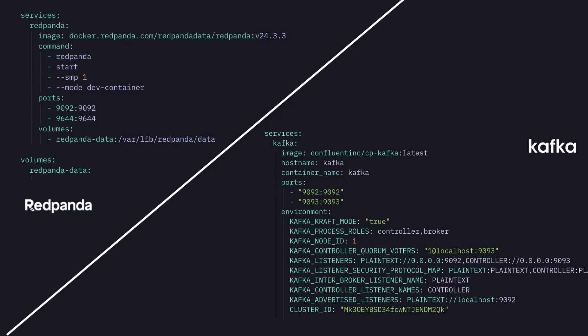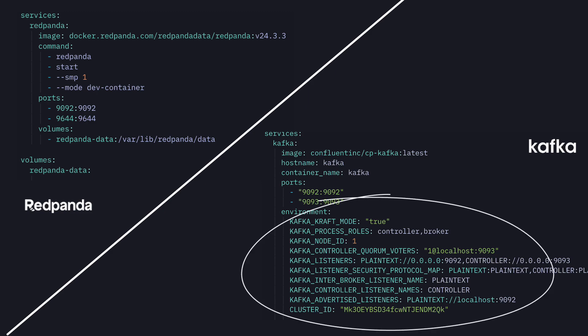I'm a huge fan of containerization, so I tried deploying them both with Docker. If we compare both Docker Compose files, we can see that Kafka has slightly more configuration options. I really tried to strip out as much as I could, but Kafka's configuration is just more complex.